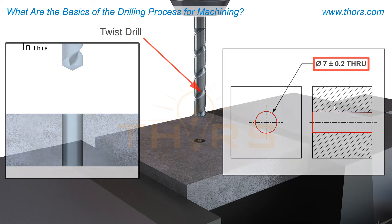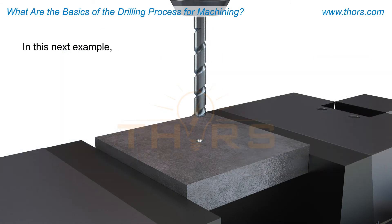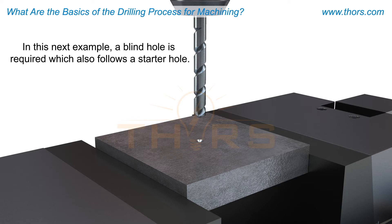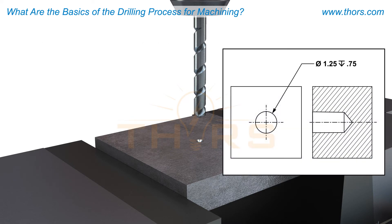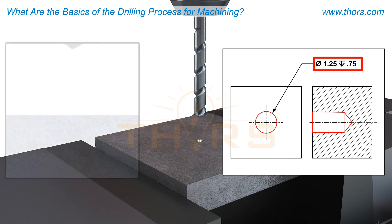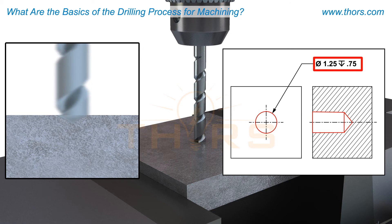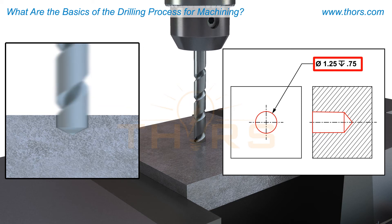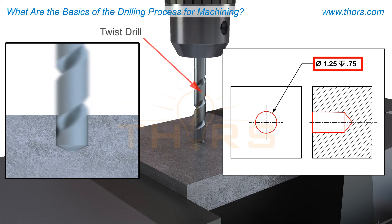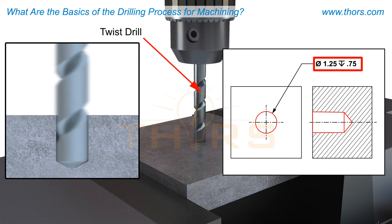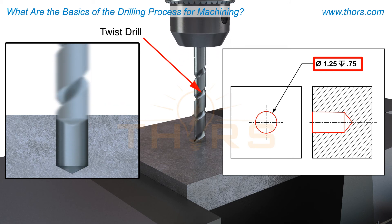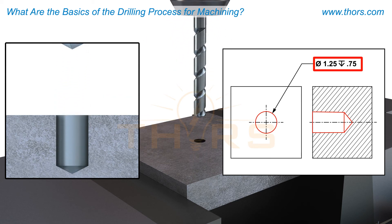In this next example, a blind hole is required, which also follows a starter hole. The engineering drawing requirement shows a 1.25 inch blind hole that is 750 thousandths of an inch deep. The tool used to drill this blind hole is a twist drill of the required diameter, which is programmed to drill to the specified depth.